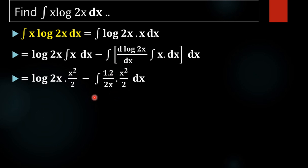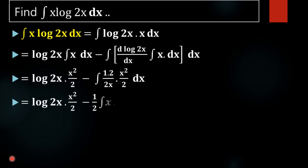So we have: 1/2x multiplied by 2, into integral of x which is x²/2. Cancelling the 2s, and then x, what remains gives us x²/2 into log(2x), minus x²/4.